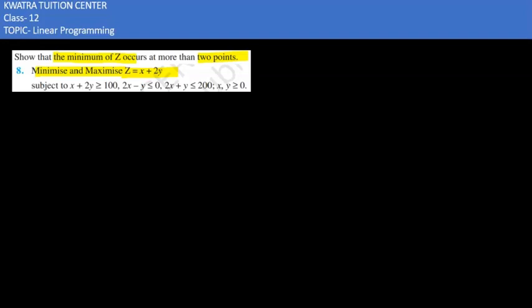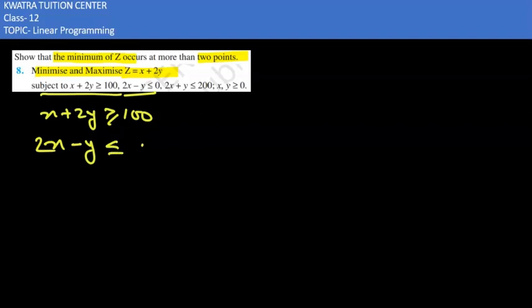Here we have constraints which are subject to x plus 2y less than or equal to 100. This is our first constraint. The second constraint is 2x minus y less than or equal to 0.